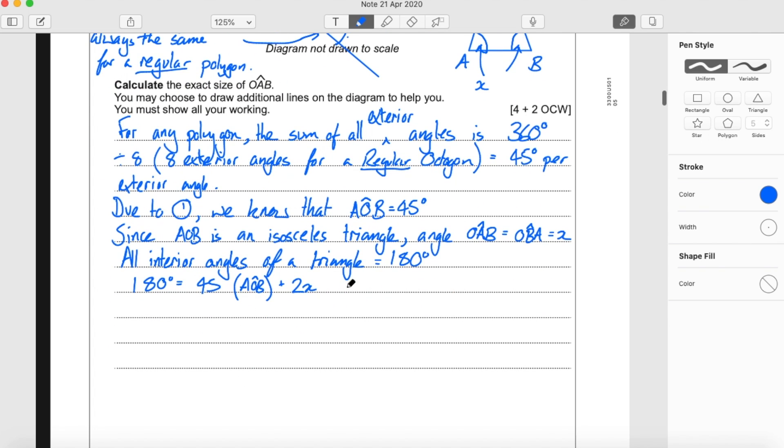So now we just have a simple algebra question that we need to rearrange and find X. So 180 minus 45 is 135 equals 2X. Divided by 2 gives 135 divided by 2. 2 into 13 goes 6 times with 1 left over, 2 into 15 goes 7 times with a remainder. So X equals 67.5 degrees.